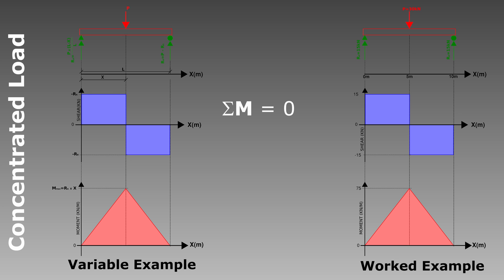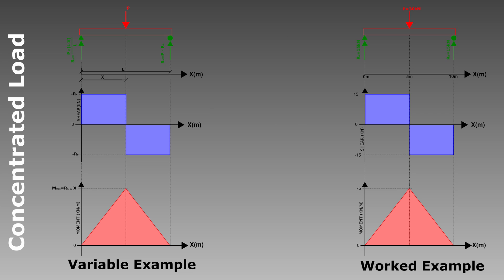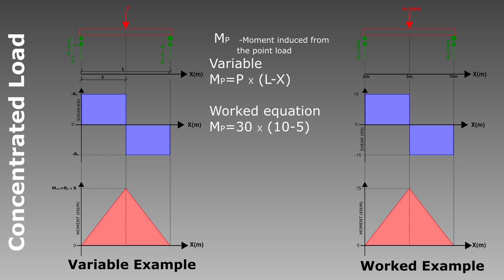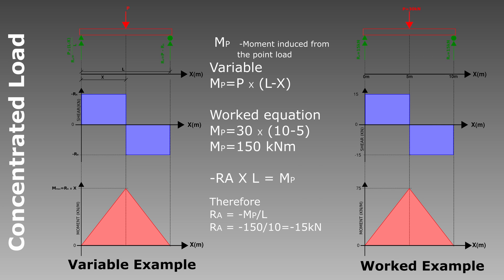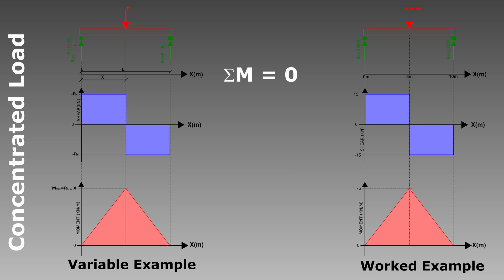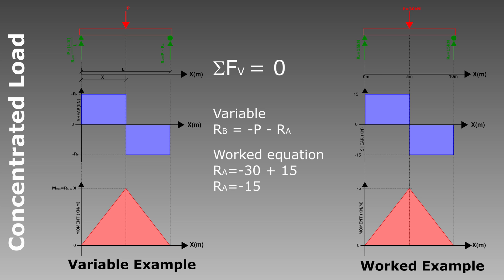We use the equilibrium equation for moments to work out the vertical reactions. Taking the moment around RB gives one unknown — the reaction at RA. The moment from point load P at distance (L minus x) from RA gives us RA = P(L − x)/L. In our worked example that's 15 kN. For RB, using the vertical force equilibrium equation, P minus RA must equal RB.